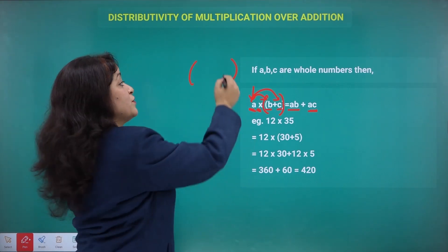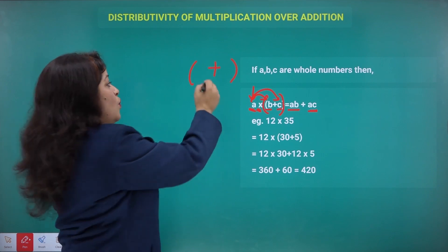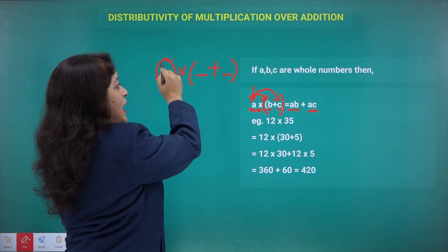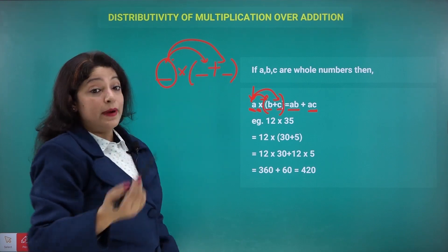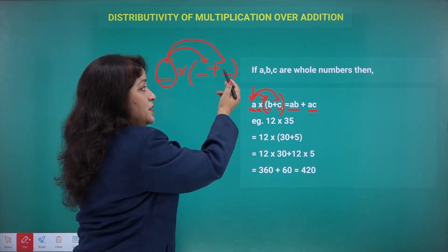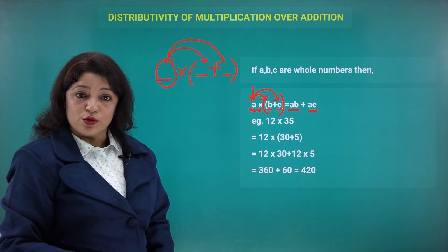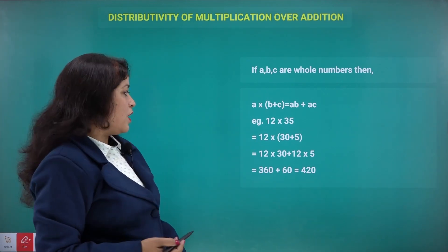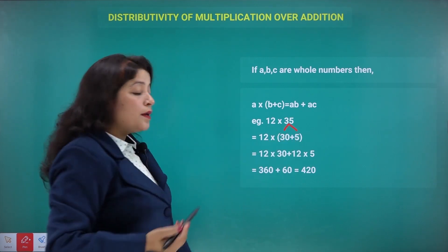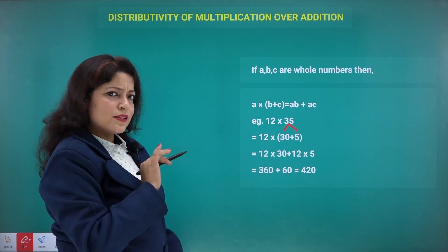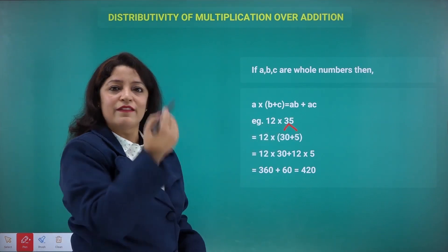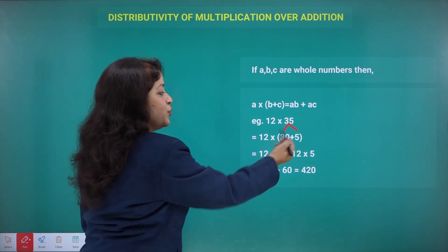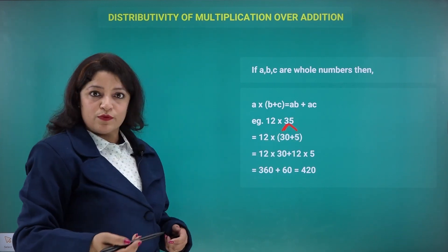So whenever any two or more numbers inside a bracket are added together and one more number is being multiplied to that bracket, we multiply that number by each and every number inside the bracket. For example, take 12 multiplied by 35. Using the distributive property, we split 35 as 30 plus 5.